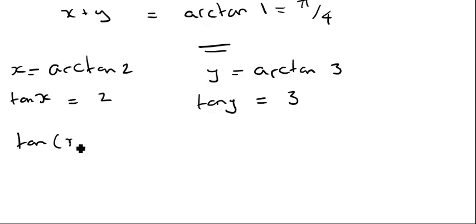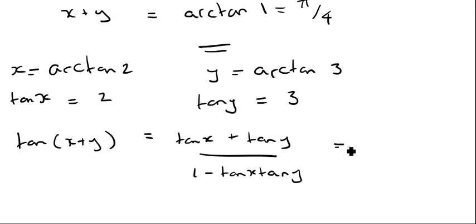And using the same method as before, tan(x+y) equals tan x plus tan y all over 1 minus tan x tan y. And this is going to give me 2 plus 3 all over 1 minus 2 times 3. And this time, it's going to give me an answer of minus 1.